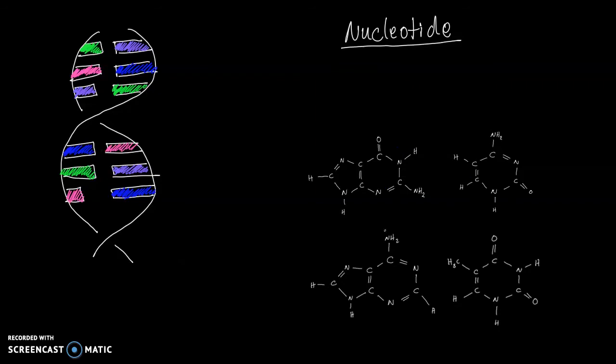These four bases are divided into two groups. And the two groups are purines and pyrimidines. The group purines is composed of the base guanine and the base adenine. In the group pyrimidines, we have the cytosine and thymine.